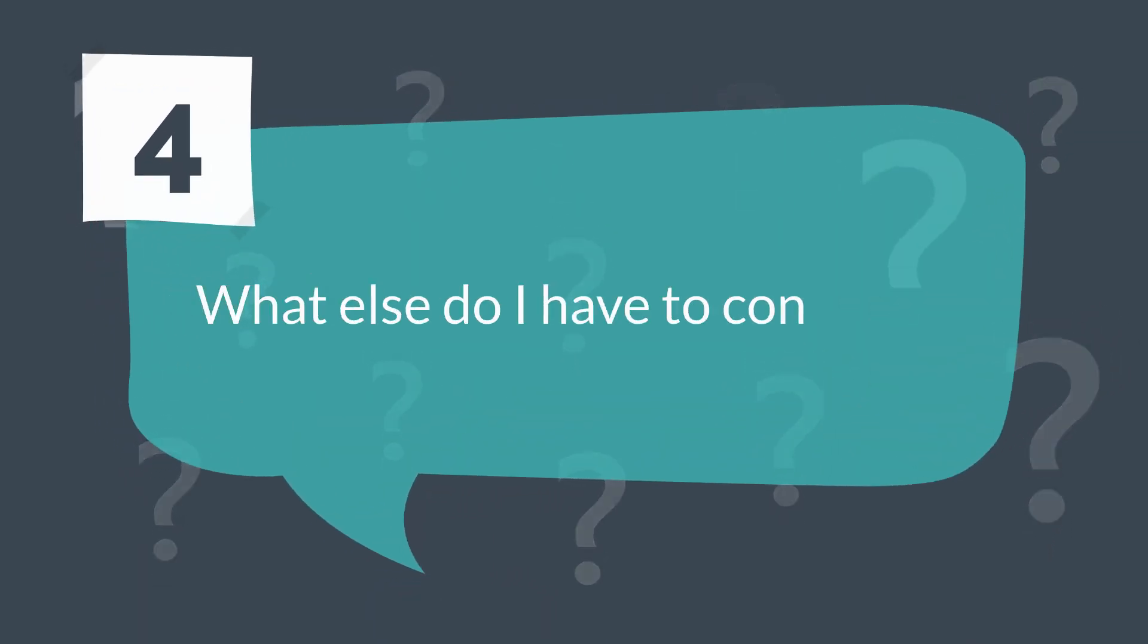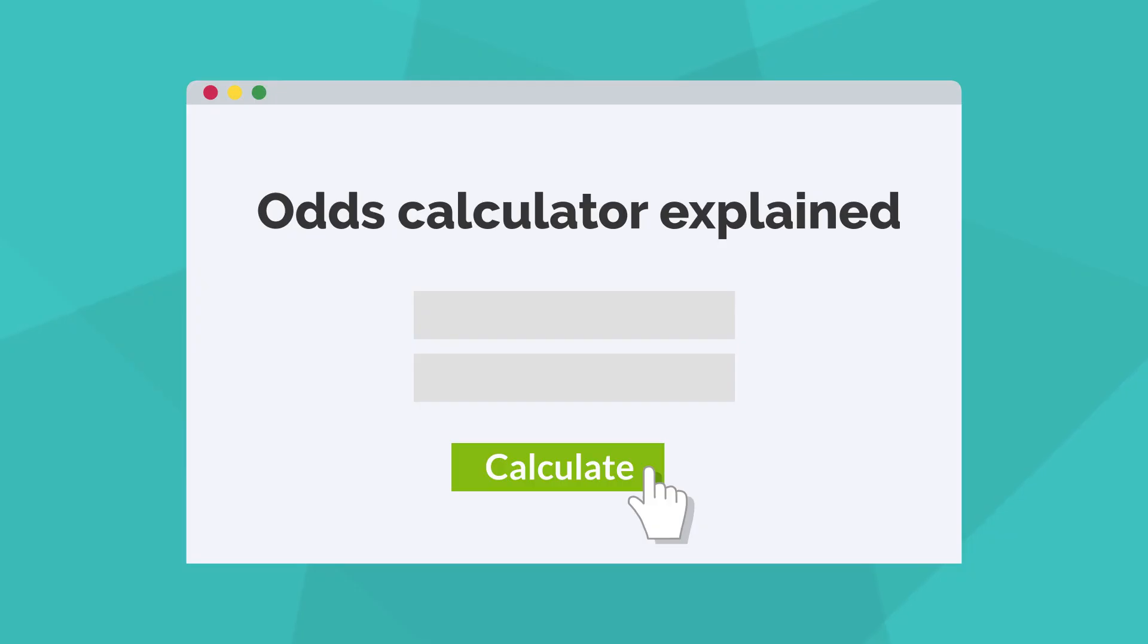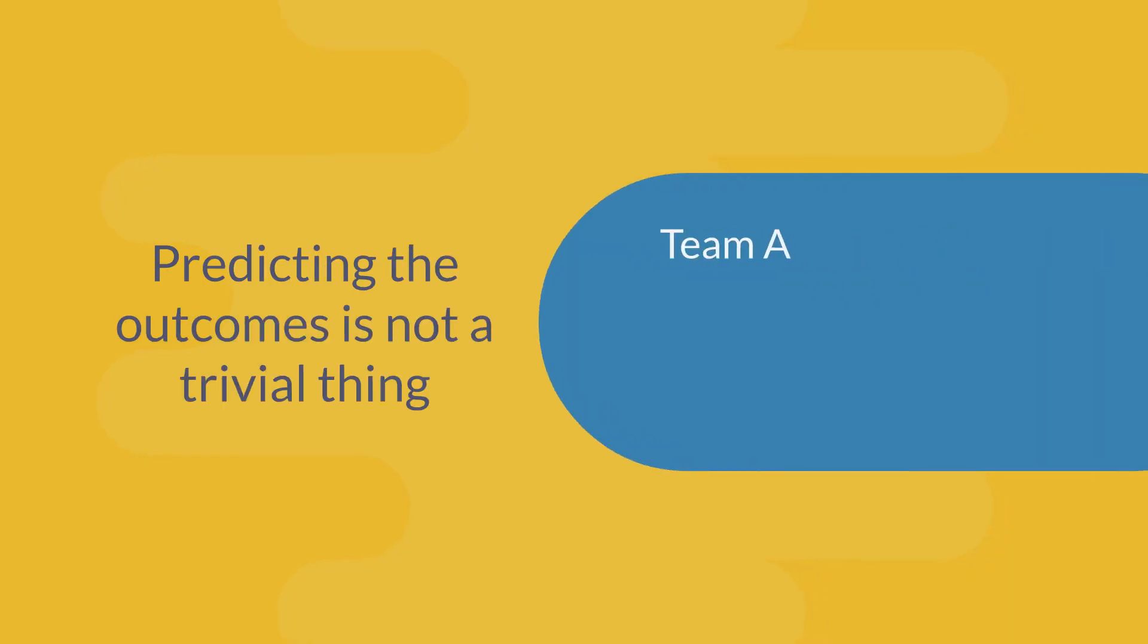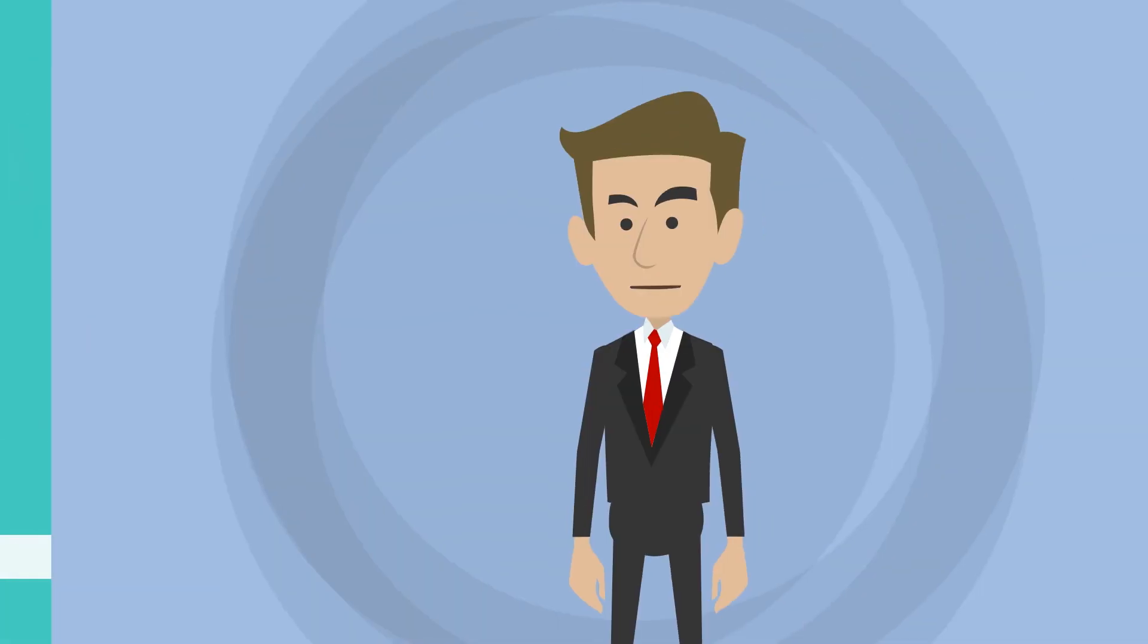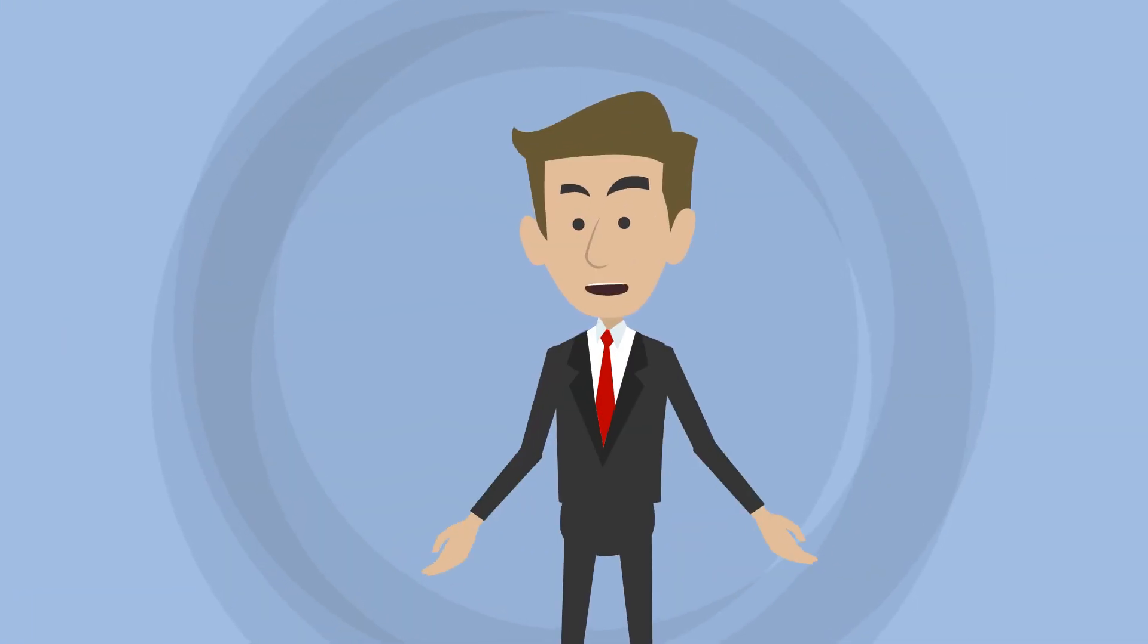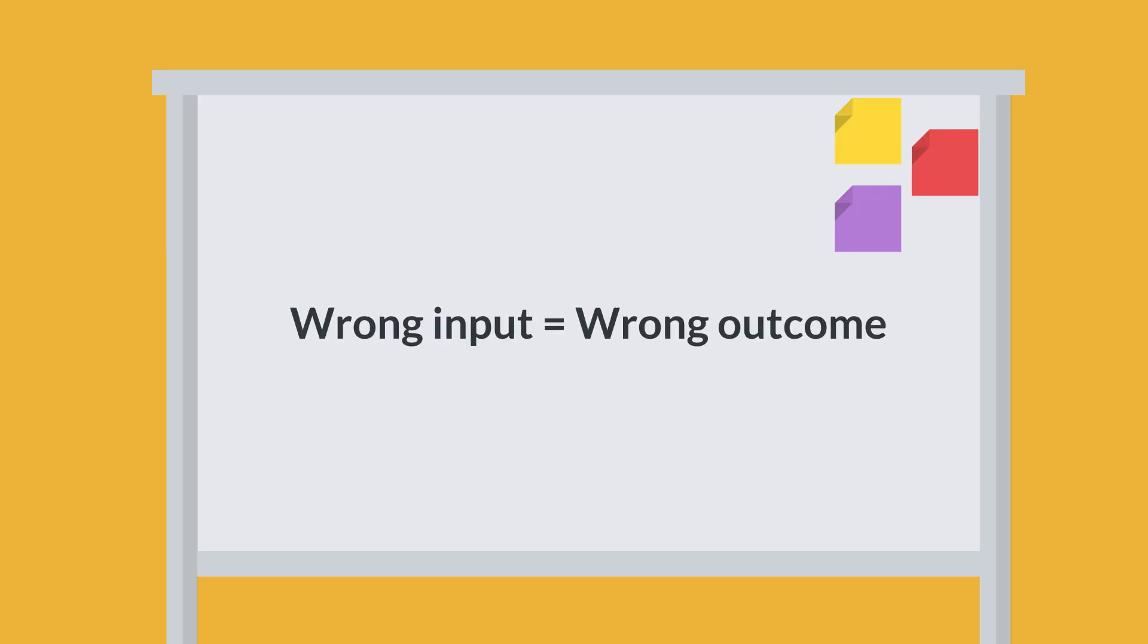What else do I have to consider to have a valid prediction model? You have to feed it with the right data. Predicting outcomes is not a trivial thing. We are giving you tools that help you with calculations, but the crucial part is feeding it with the correct data. So remember: wrong input equals wrong outcome.